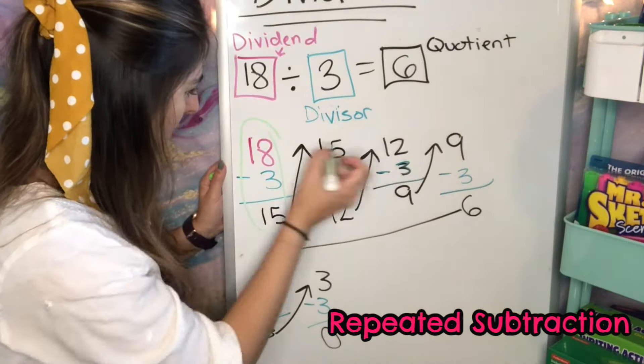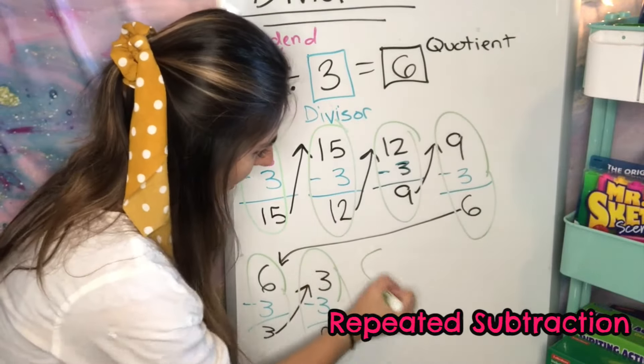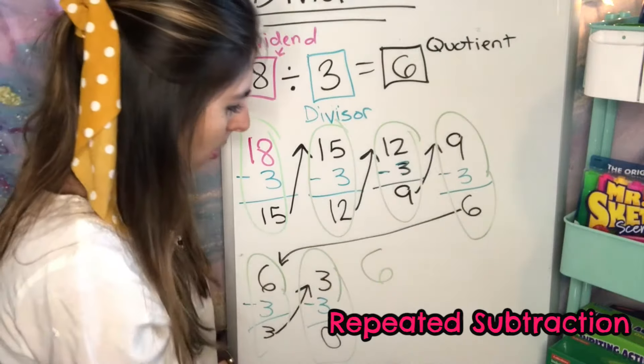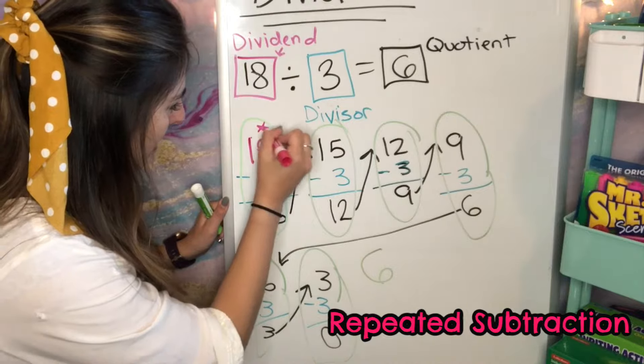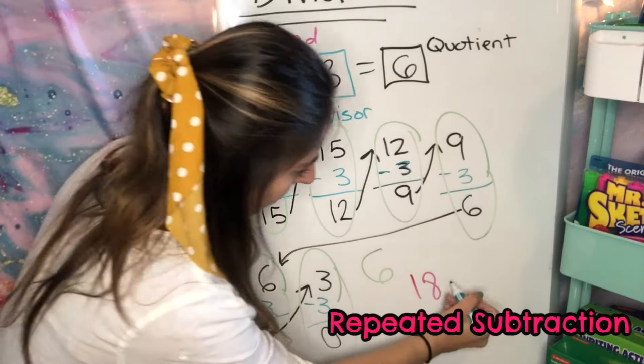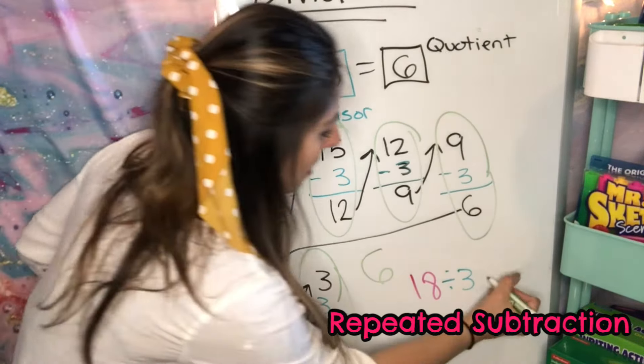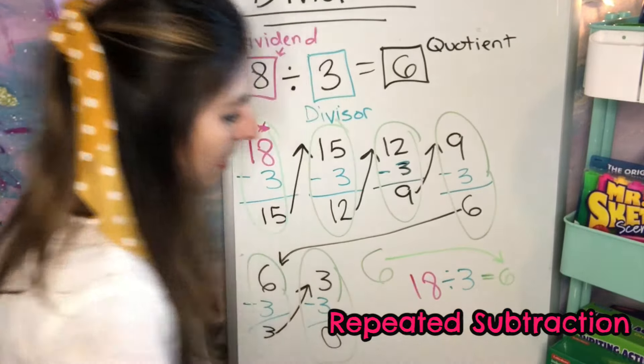So I did that 1, 2, 3, 4, 5, 6. I did that 6 times, so that means our answer is going to be 6. So I can see I took my 18 here. I divided by 3 because I subtracted by 3 for each one. And that equals 6 because that's the amount of times that I did it.